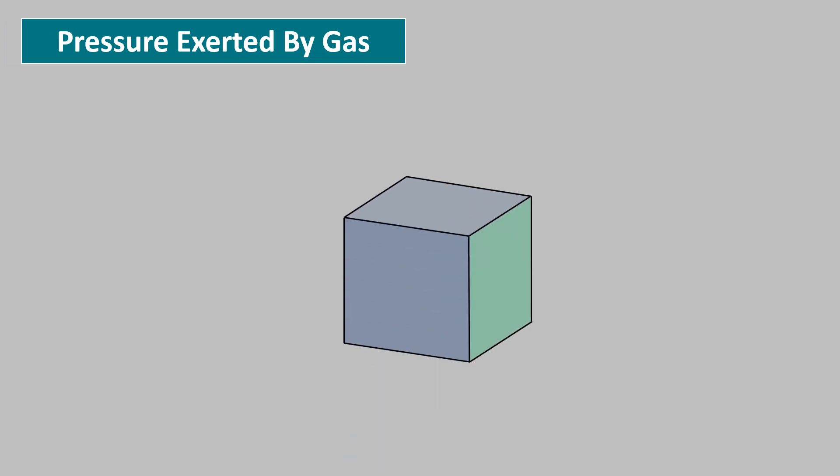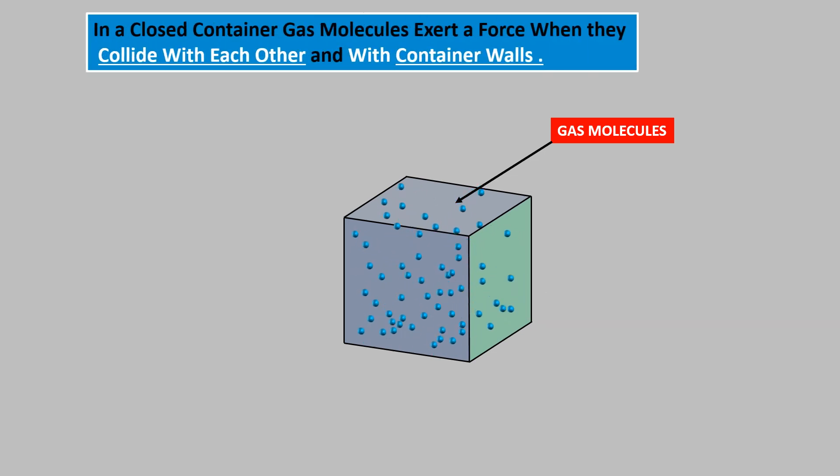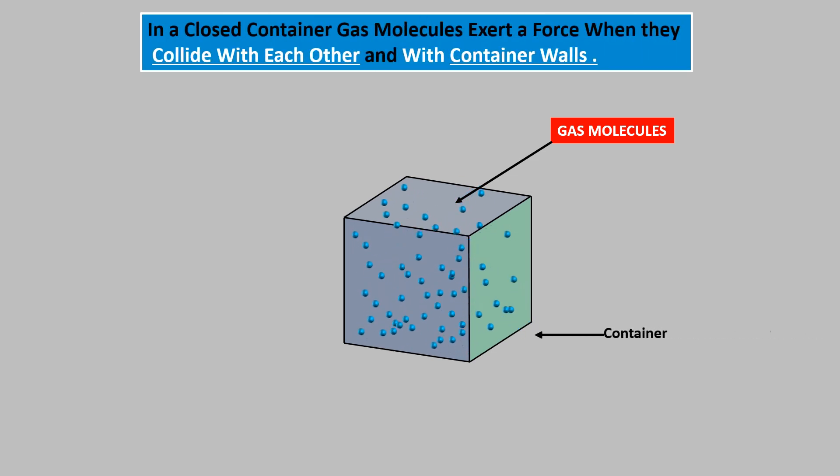Pressure exerted by gas. Gases consist of molecules and these molecules move randomly. In a sealed container, they exert a force when they collide with each other and with the container walls. This applies a pressure to the container walls. This pressure is equal throughout the container.